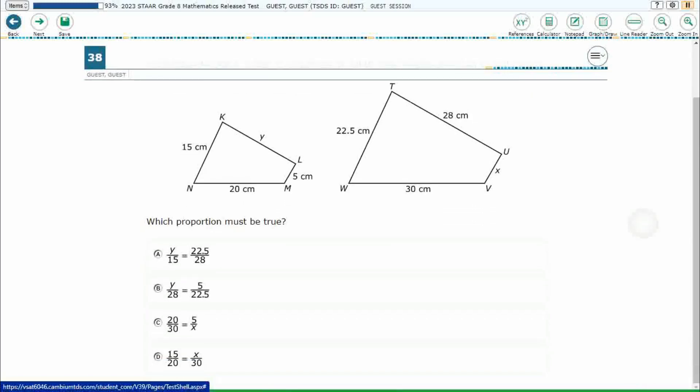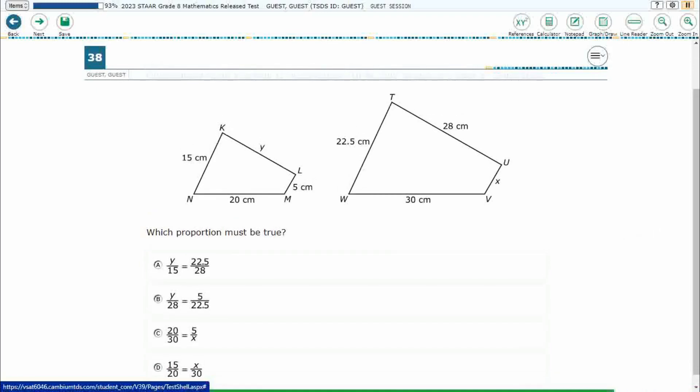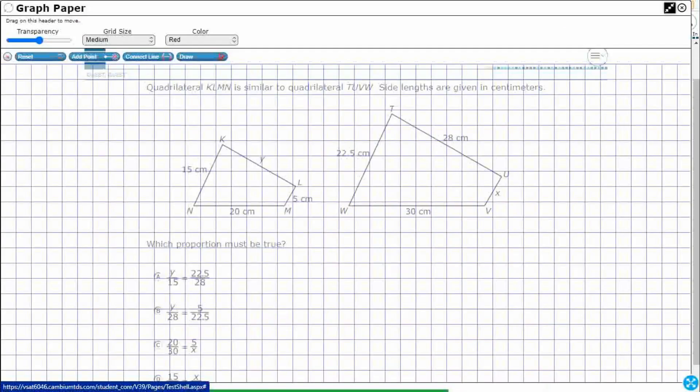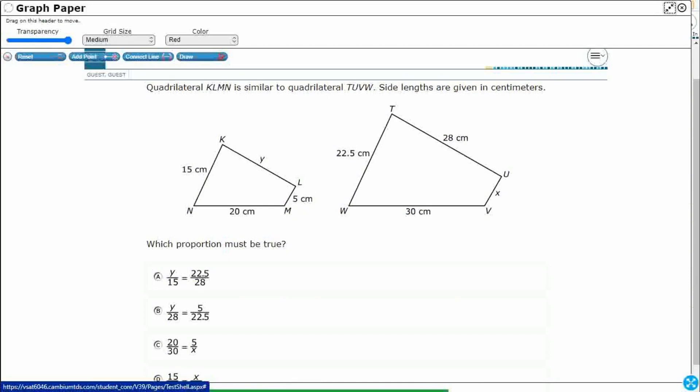Alright, so we have two similar quadrilaterals. We need to find a proportion that is true. Now that term 'similar' is very important. We can visually see that they look the same in regards to their angles, just different sizes. Sometimes the similarity will have one of the shapes being rotated, but in this case they don't. They are oriented the same way, and so the similarity means that we have proportional sides.